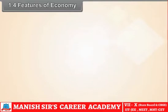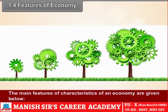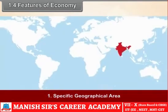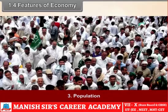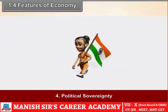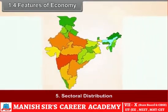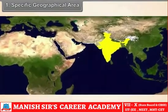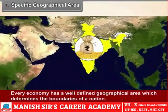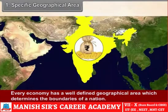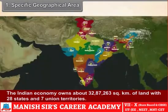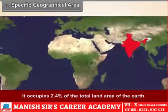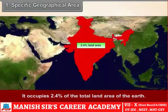1.4 Features of Economy. The main features or characteristics of an economy are: 1. Specific Geographical Area, 2. Natural Resources, 3. Population, 4. Political Sovereignty, 5. Sectoral Distribution. Every economy has a well-defined geographical area which determines the boundaries of a nation. The Indian economy owns about 32,87,263 square kilometers of land with 28 states and 7 Union territories.